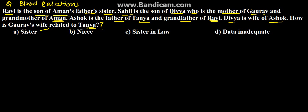We have been given 4-5 conditions and accordingly we need to find the relationship between Gaurav's wife and Tanya. The options are: sister, niece, sister-in-law, or data inadequate.